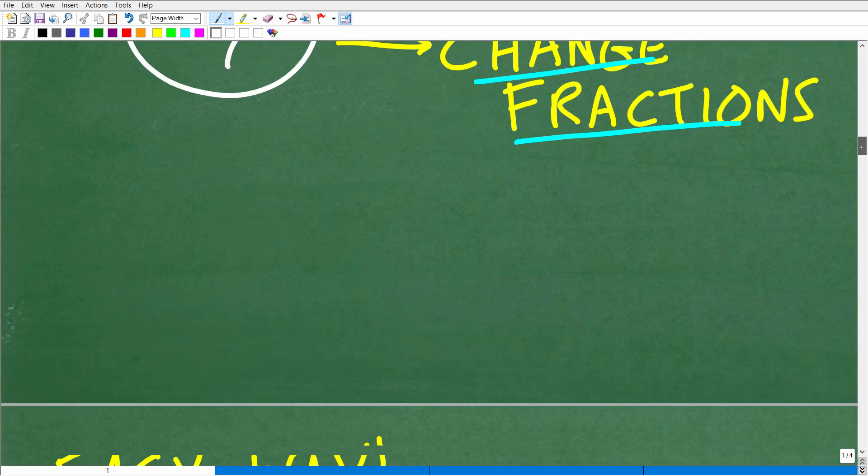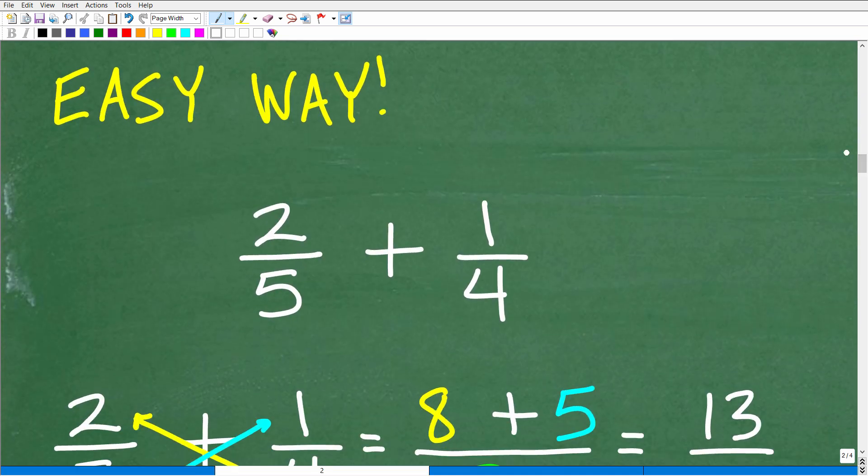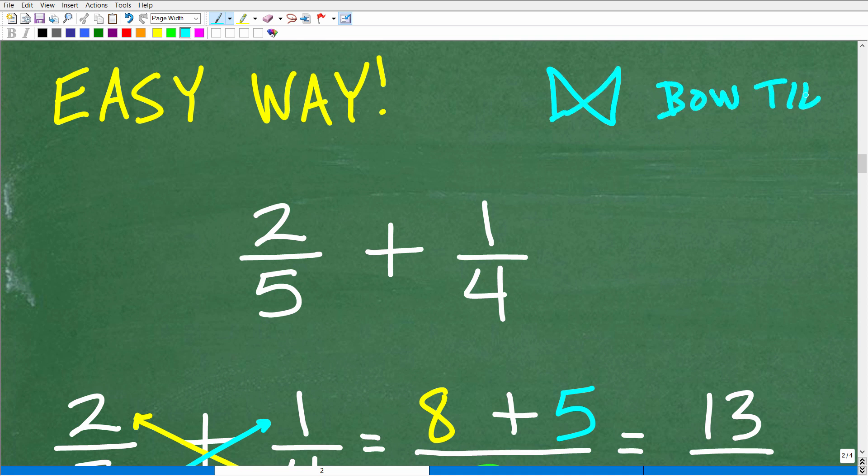What I'm getting at in this particular video is if you're struggling with fractions, you still need to be able to do a problem like this and find the sum. So how can you do this without your brain not having to work so much? Well, let's go ahead and show you this right now. Okay, so I'm going to call this the easy way, but really I refer to this as the bow tie technique.